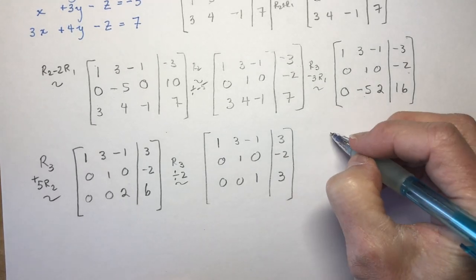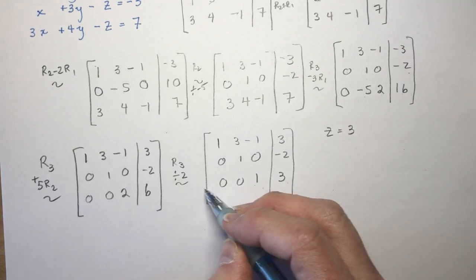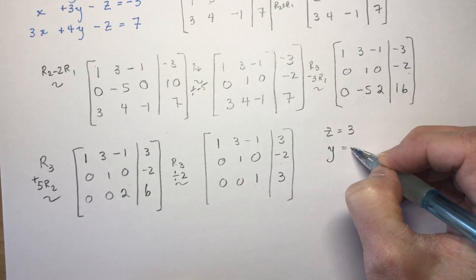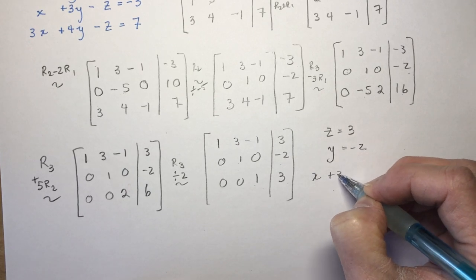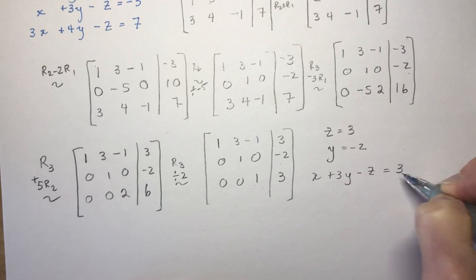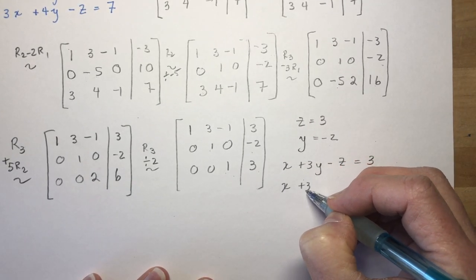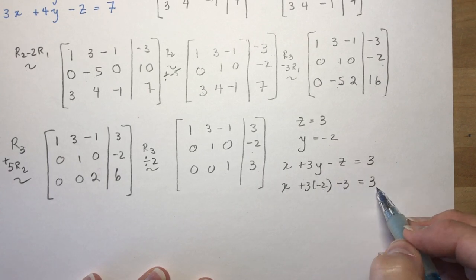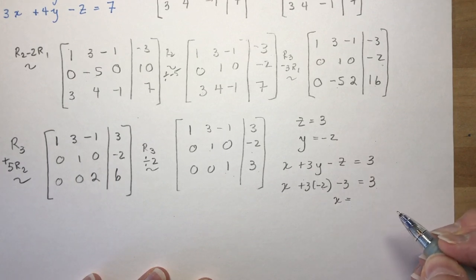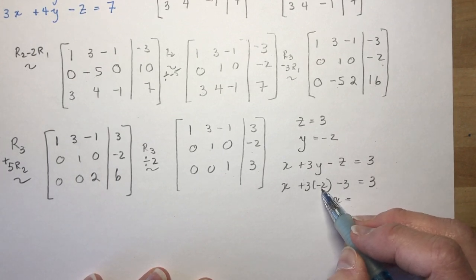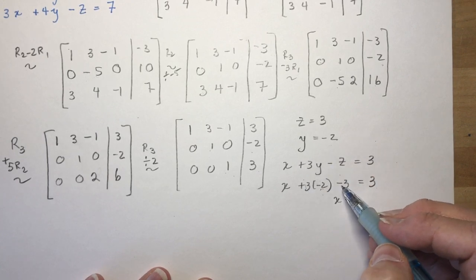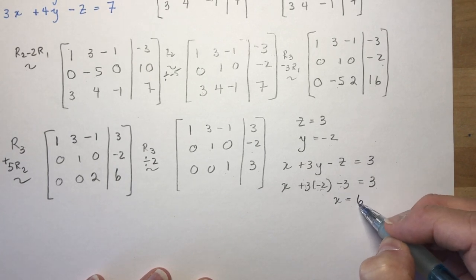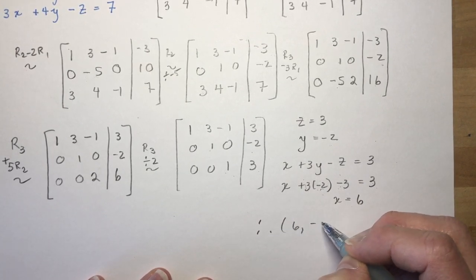I divide Row 3 by 2, giving 0, 0, 1, 3. Now the matrix is in row echelon form. Back substitution: z equals 3, y equals minus 2. For x: x plus 3y minus z equals minus 3, so x plus 3 times minus 2 minus 3 equals minus 3, which gives x minus 6 minus 3 equals minus 3, so x equals 6. The point of intersection is 6, minus 2, 3.